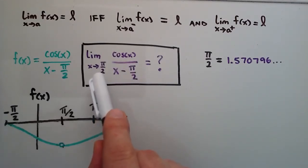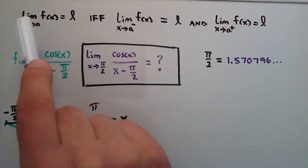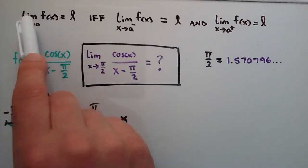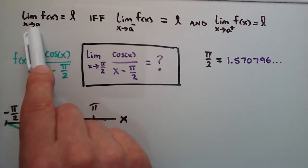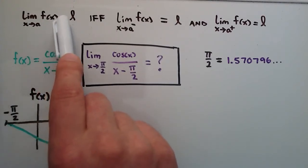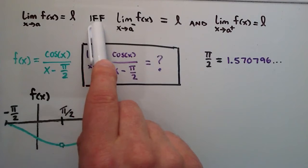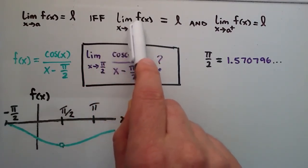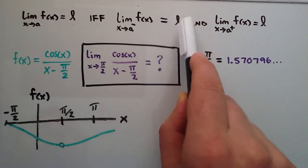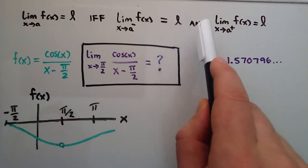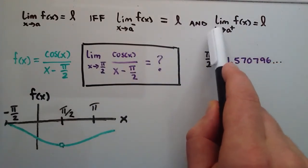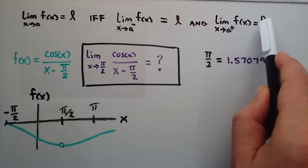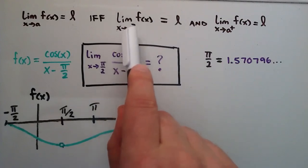The reason we can do that is because of this rule: the limit of some function f(x) as x approaches some value a equals some value L if and only if the limit of that function as x approaches a from the left is equal to L, and the limit as x approaches a from the right is also equal to that same value L.